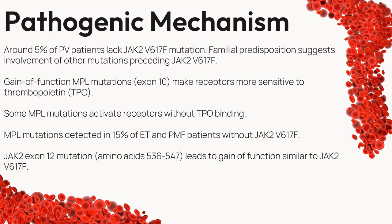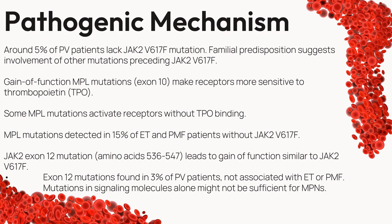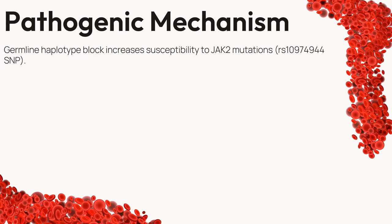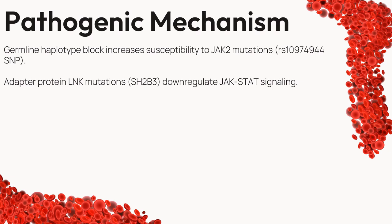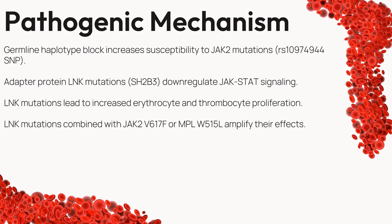We also encounter the JAK2 exon-12 mutation, an alteration spanning amino acids 536 to 547, whose gain-of-function characteristics mirror those of JAK2V617F. Exon-12 mutations, found in only 3% of PV patients, are not associated with ET or PMF, emphasizing the distinct nature of these genetic events. However, these mutations alone may not be enough to drive myeloproliferative neoplasms — enter the germline haplotype block, which heightens susceptibility to JAK2 mutations, and adaptor protein LNK mutations (SH2B3), a regulatory element that down-regulates the JAK-STAT signaling pathway, leading to increased proliferation of erythrocytes and thrombocytes. When combined with JAK2V617F or MPLW515L mutations, LNK mutations amplify their effects, shaping the course of the disease.